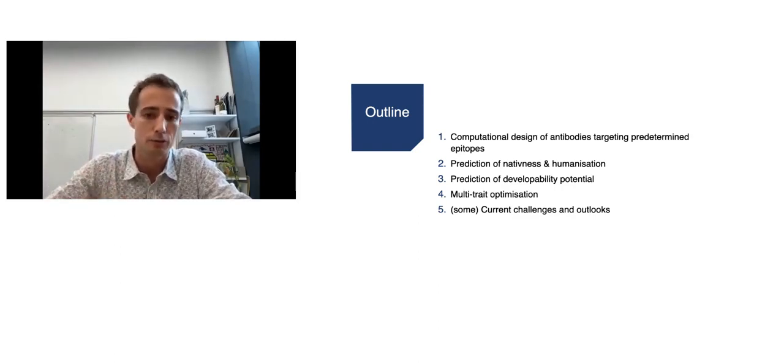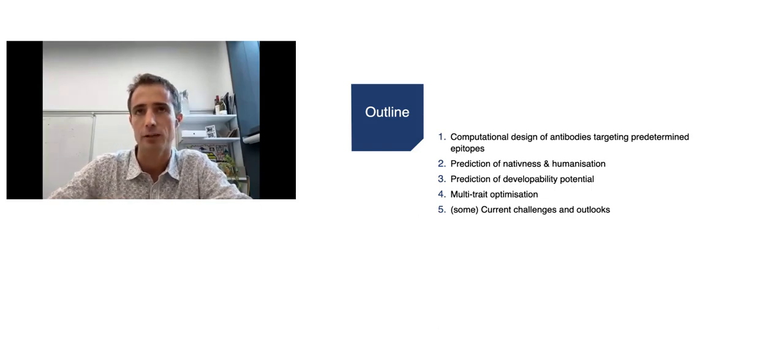So this is the outline of my talk. So I will start with some introduction of some computational approaches for obtaining antibodies targeting predetermined epitopes. And then I will touch on some other areas in which computational methods can really make a difference in antibody development. And these areas include the prediction of humanness, the prediction of the developability potential, and this multi-trait optimization, which I referred to earlier. And at the end, I will conclude by just highlighting a few of the current challenges and perhaps outlooks very broadly. And I mean, of course, I will focus on the work that I have done or the work that has happened in my group. But needless to say, there are a lot of capable academic groups and companies and people more broadly that are really advancing the field.